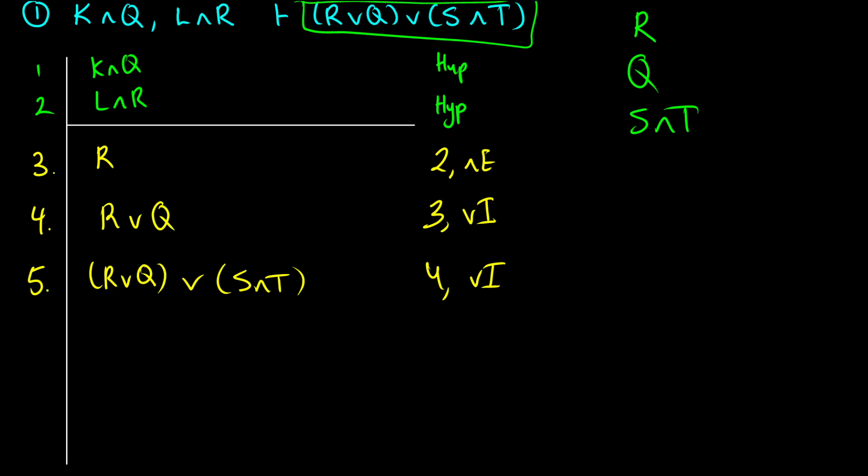But we're already given in the assumption that L and R is true, that R is true. So it doesn't matter what Q or S and T are. They can both be false. It doesn't matter. R or Q or S and T is true. So that's how we use or introduction.